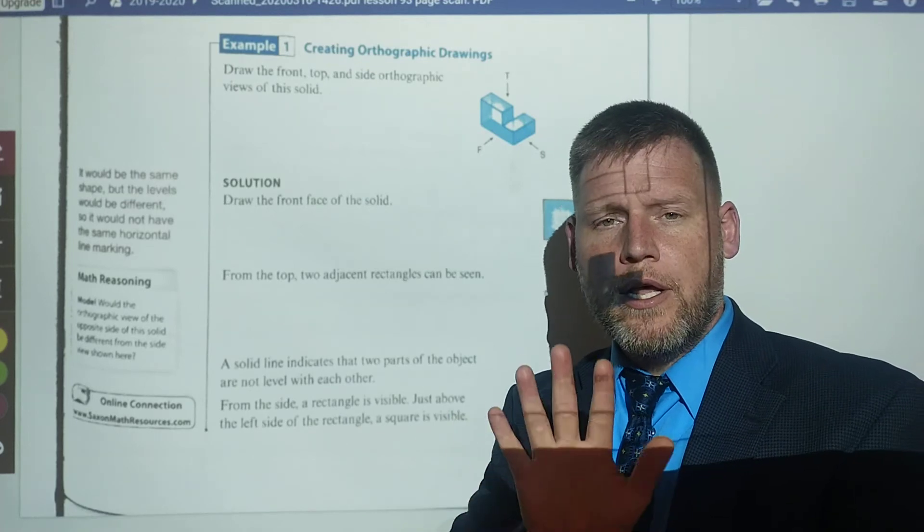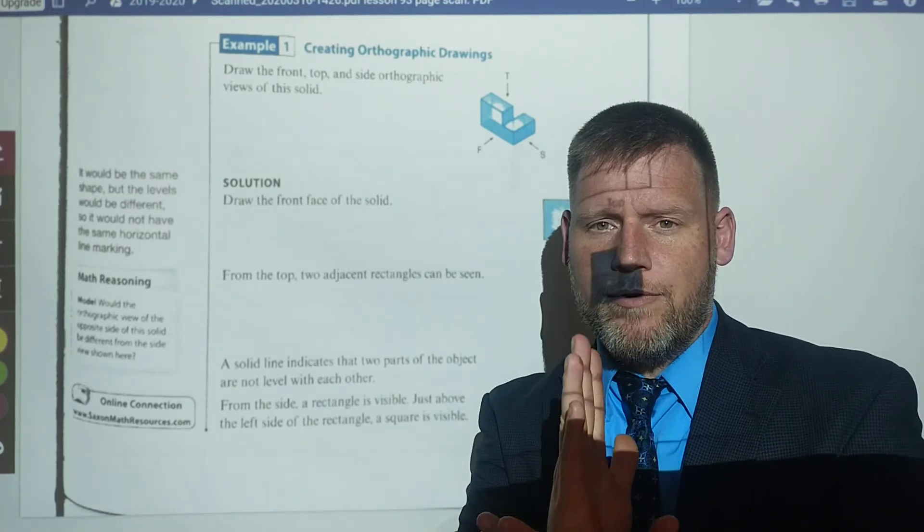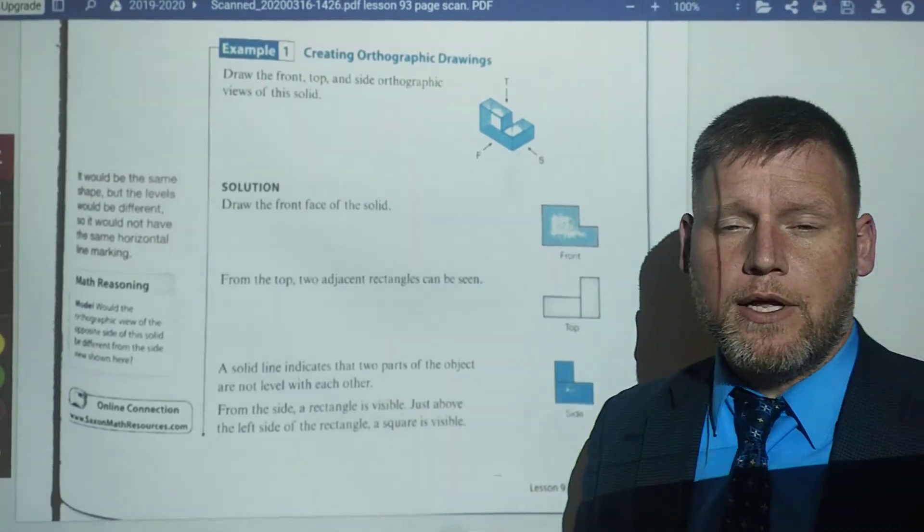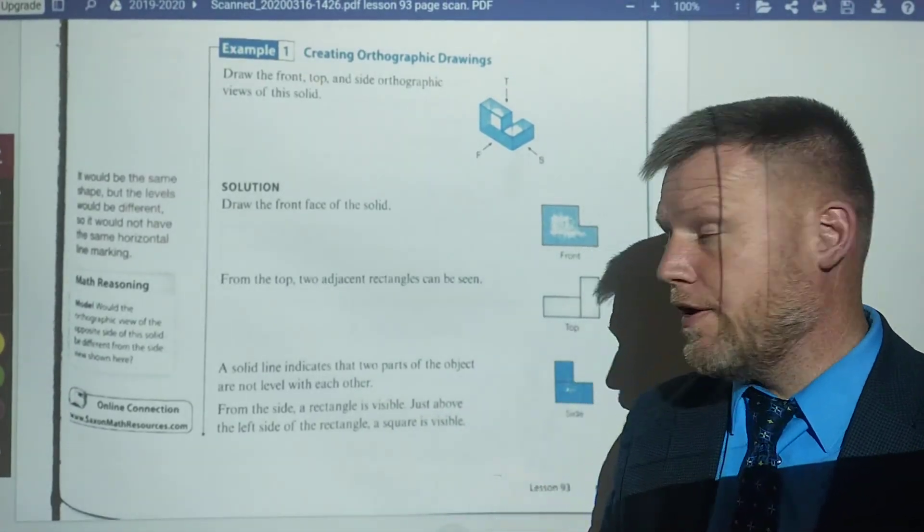We're just taking it and turning it, only seeing one side or one face at a time and looking at all three views, front, side, and top, and representing them as flat images.